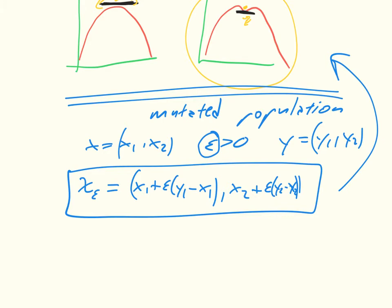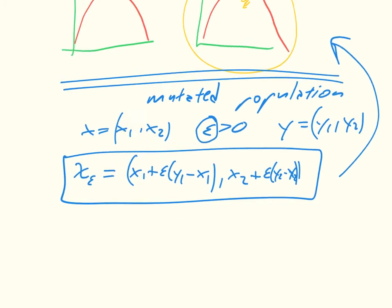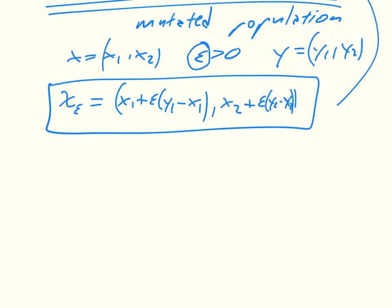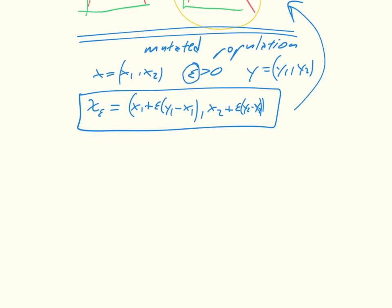And then from that we can define what is called, let me try and get them both in there, we can define what is called an evolutionary stable strategy, an ESS, and here we say